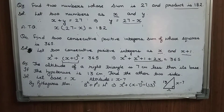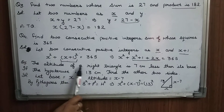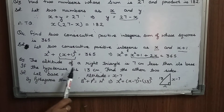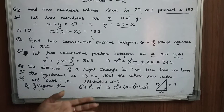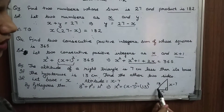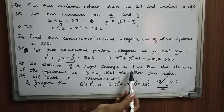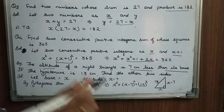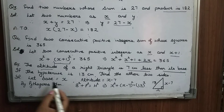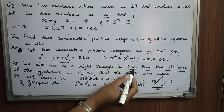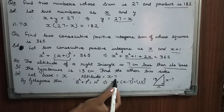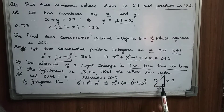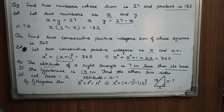I hope you understood this. Now let's discuss Question 5: The altitude of a right triangle is 7 cm less than its base. If the hypotenuse is 13 cm, find the other two sides. We consider the right triangle. Let the base equal x, and since the altitude is 7 cm less than the base, altitude equals x minus 7. The hypotenuse is 13 cm, and we apply the Pythagoras theorem.